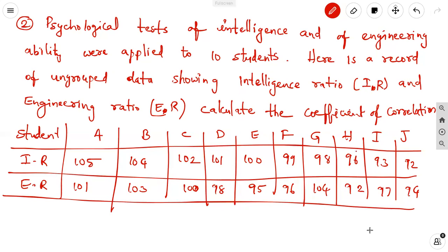Second problem: psychological tests of intelligence and engineering ability were applied to 10 students. Here is a record of ungrouped data showing intelligence ratio and engineering ratio. Calculate the coefficient of correlation.